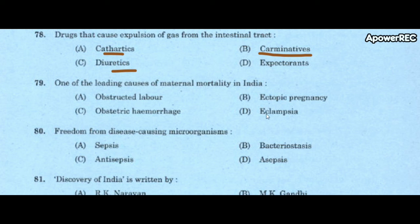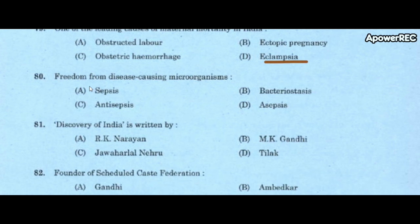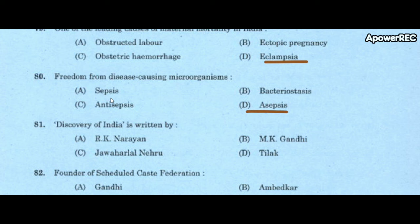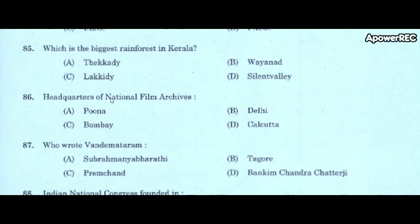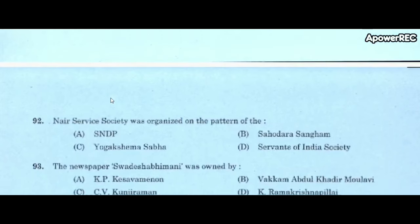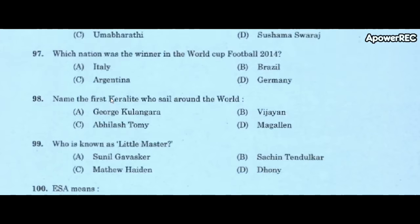Next question: one of the leading causes of maternal mortality in India is A) obstructive labor, B) ectopic pregnancy, C) obstetric hemorrhage, D) eclampsia. Correct answer is eclampsia. Freedom from disease-causing microorganisms is called asepsis.